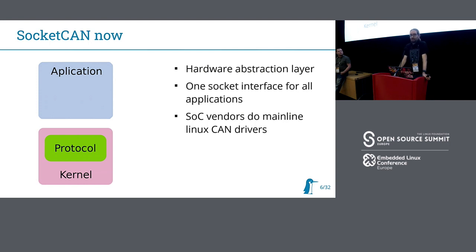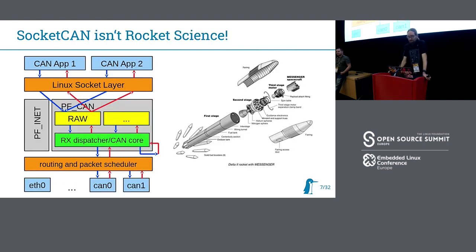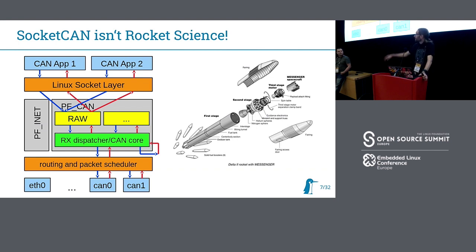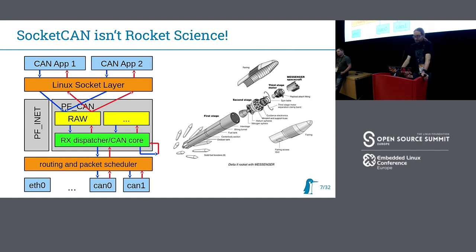Now you can use the same application for testing on your laptop with some USB adapter, or the same application on your SoC with the internal CAN adapter. This is how CAN looks now: you have different applications, the socket layer, the different protocols, then the networking core — packet scheduling, routing — and the CAN interfaces. As an application developer, you just interface with the socket layer, and as a driver developer, you're at the bottom.